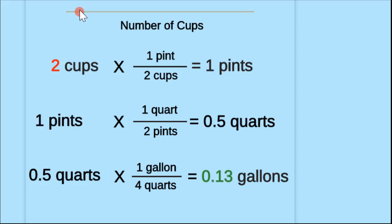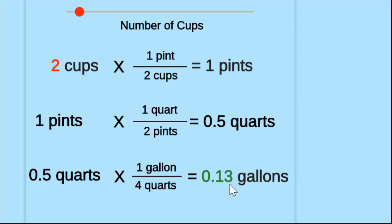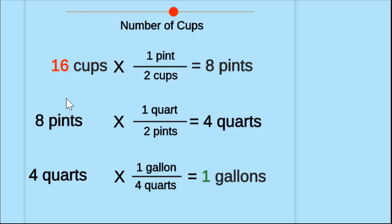So if I change this to two cups — because we know two cups is equal to one pint — and one pint, we multiply by our conversion factor, which says one quart is equal to two pints. So if I multiply one times a half, I get half of a quart. Let's increase it all the way to 16 cups. Here I have 16 cups. If I multiply by the conversion factor of one pint over two cups, 16 multiplied by a half — which is the same as dividing by two — I get eight pints.